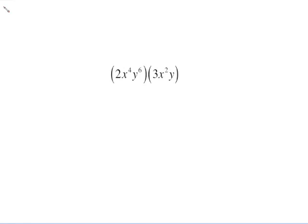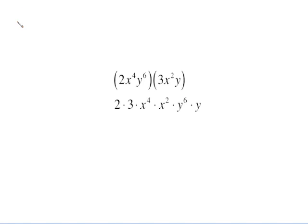So what I'd like to do is rewrite this so that my x values are sitting next to each other because they're a common base. And my y values are next to each other because they are a common base. Now I can use my rule that says multiplying with the common base, keep the base and add the exponents. Same thing for the y's.